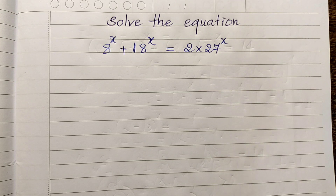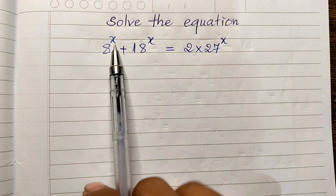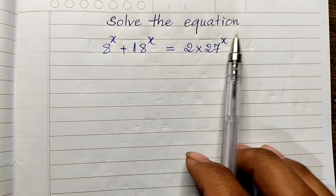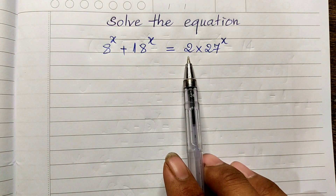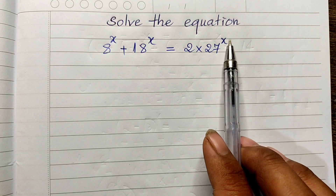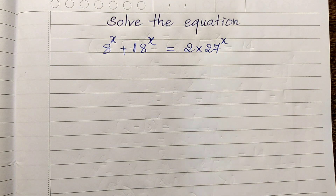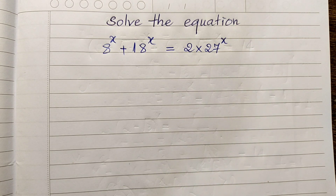Hello everyone, welcome to my YouTube channel. Today I have one exercise on paper: solve this equation — 8 to the power 8, plus 18 to the power 8, equals x times 27 to the power 8. Do you know how to solve this? If you know, please try it first, then come back to verify your solution. Before we go to the solution, please don't forget to subscribe to my channel for more exciting videos.